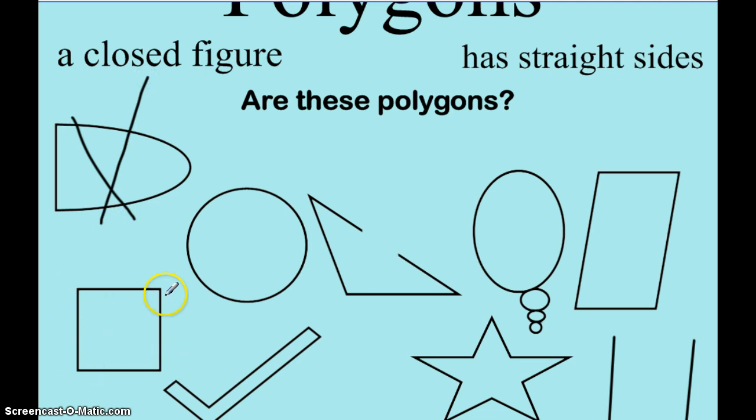This shape is closed in, it has straight sides all around, so it is a polygon. This triangle here is almost a complete triangle except for there's a gap, so we cannot say that it's a closed figure, which means it is not a polygon.